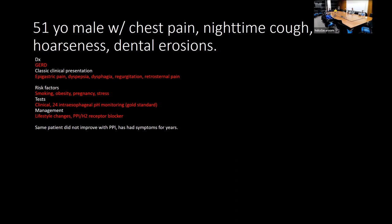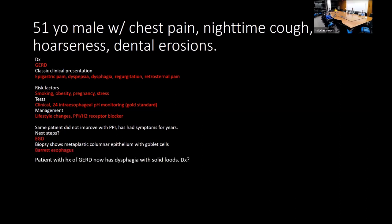If a patient with GERD on PPIs doesn't improve and has had symptoms for several years, perform endoscopy. If biopsy shows metaplastic columnar epithelium with goblet cells, that's Barrett's esophagus. A patient with GERD history developing dysphagia to solid foods — consider esophageal stricture or Schatzky's ring, though malignancy must be excluded.